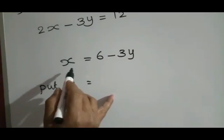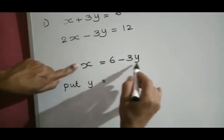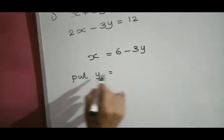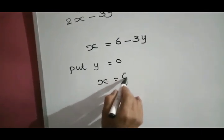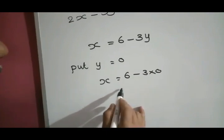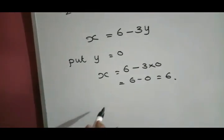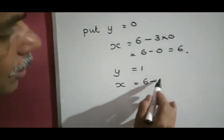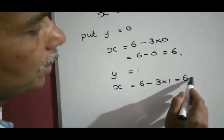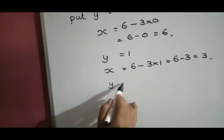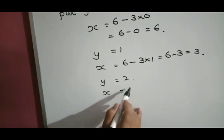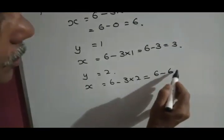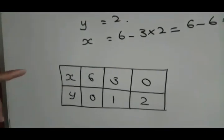For that, we express the first equation in terms of x. Now select values for y: putting y equal to 0, x is equal to 6 minus 3 into 0, that is 6. Taking y equal to 1, x is equal to 6 minus 3 into 1, which is 3. And y equal to 2 gives x equal to 6 minus 6, which is 0. Let us write these values in a table.